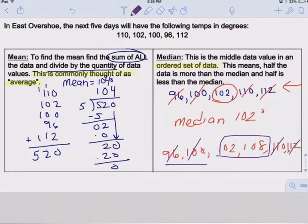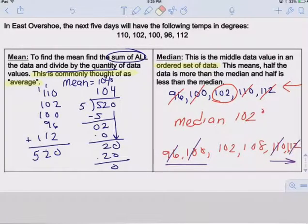So what we would do is we would take the median of these two, or the mean of those two numbers, meaning we'd add them together. 102 plus 108, we get 210, and then we would divide them both by two, which is 105.